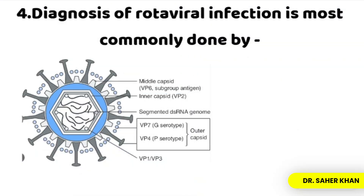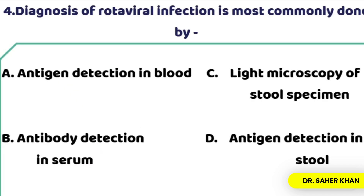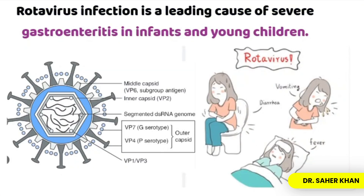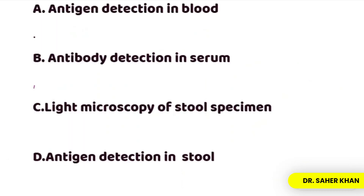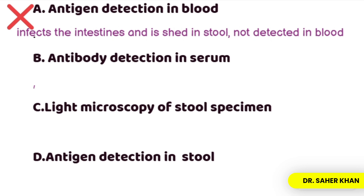Our last question: diagnosis of rotaviral infection is most commonly done by antigen detection in blood, antibody detection in serum, light microscopy of stool specimen, or antigen detection in stool. Rotavirus infection is a leading cause of severe gastroenteritis in infants and young children. Option one, antigen detection in blood, is incorrect because rotavirus infects the intestine and is shed in stool, not detected in blood.